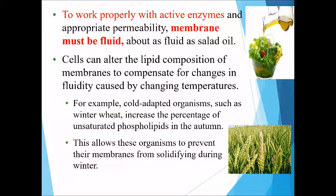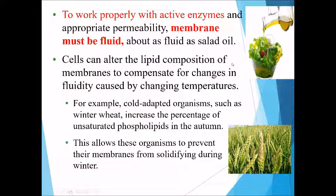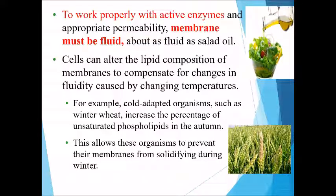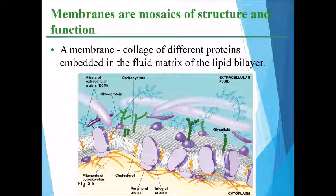To work properly with active enzymes and appropriate permeability, the membrane must be fluid — fluid such that it looks like a light oil. The cell can alter the lipid composition of the membrane to compensate for changes in fluidity caused by changing temperature. For example, cold-adapted organisms such as winter wheat increase the percentage of unsaturated phospholipids during autumn, preventing the membrane from solidifying during winter.